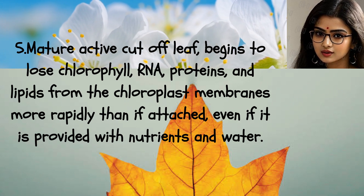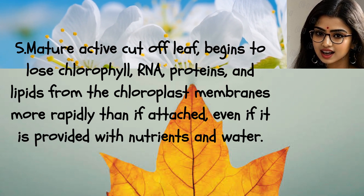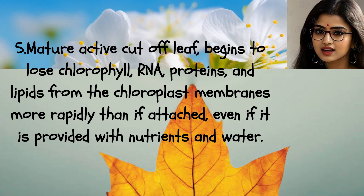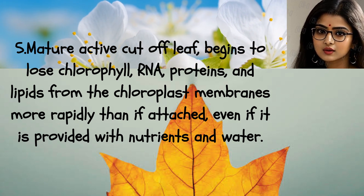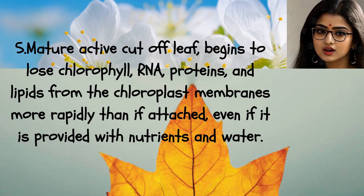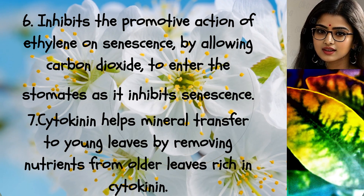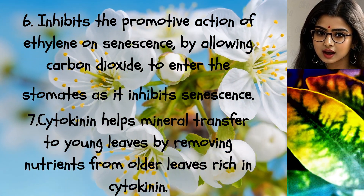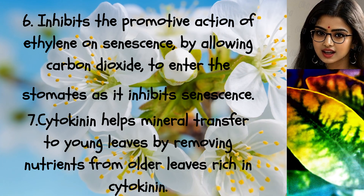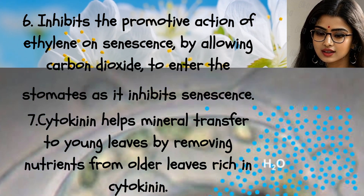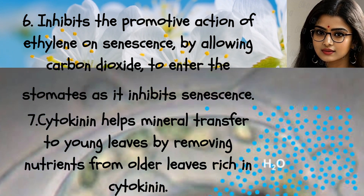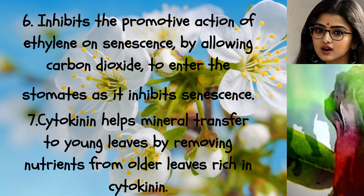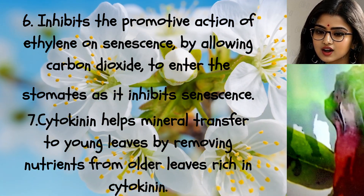Five: a mature, detached leaf begins to lose chlorophyll, RNA, proteins, and lipids from the chloroplast membranes more rapidly than if attached, even if it is provided with nutrients and water. Six: cytokinin inhibits the promotive action of ethylene on senescence by allowing carbon dioxide to enter the stomata, thereby inhibiting senescence.